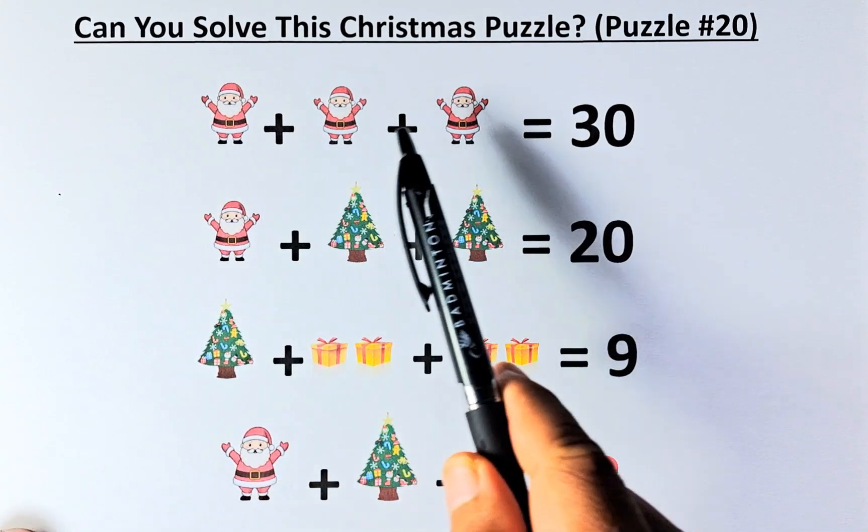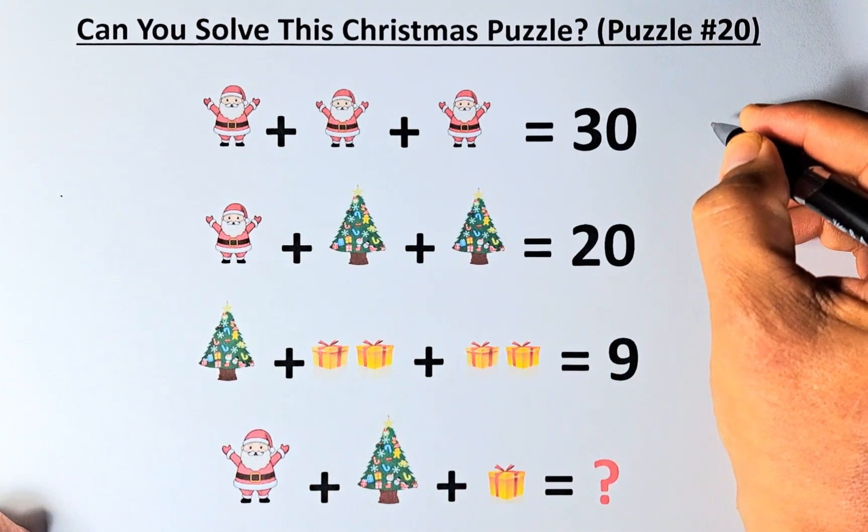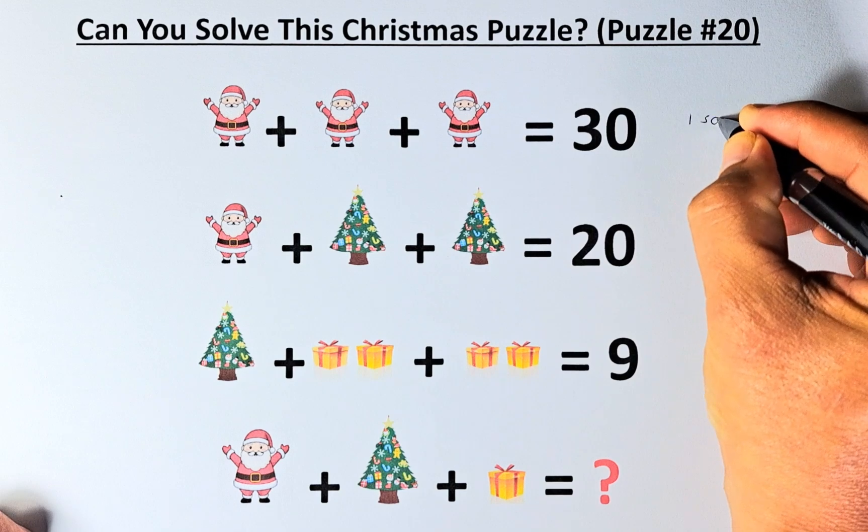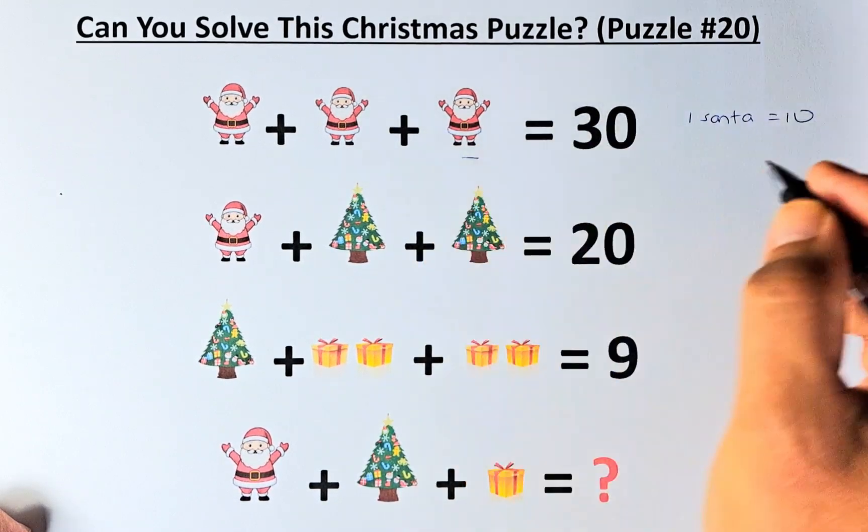If Santa Claus plus Santa Claus plus Santa Claus equals 30, then 3 Santa Claus equals 30, so 1 Santa Claus equals 10.